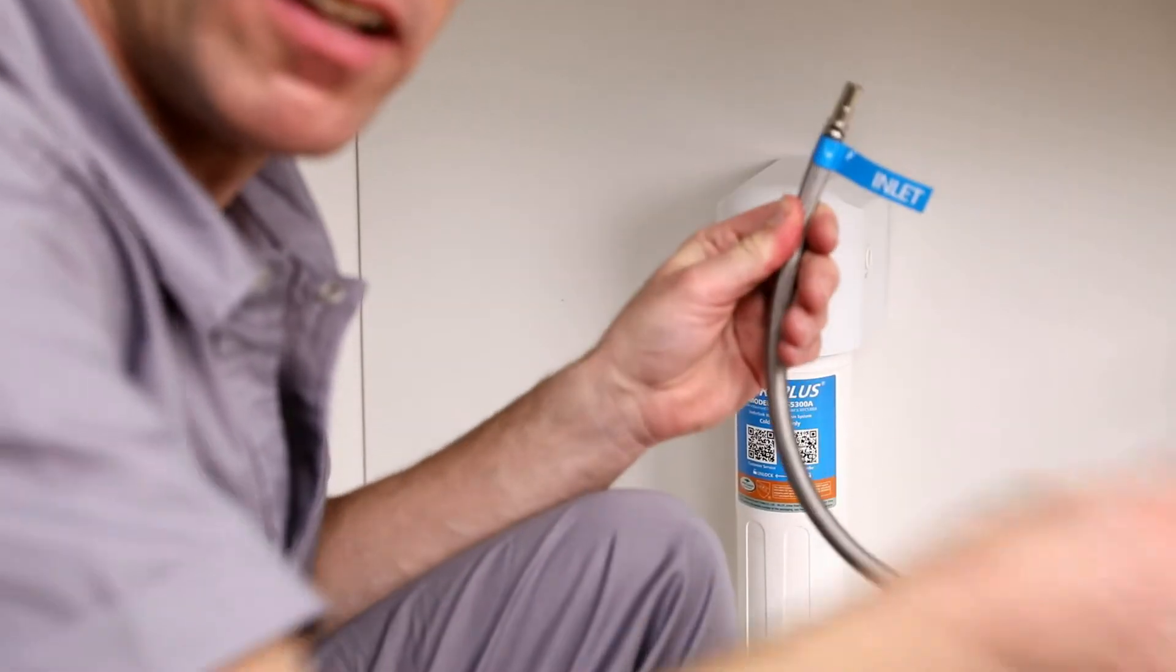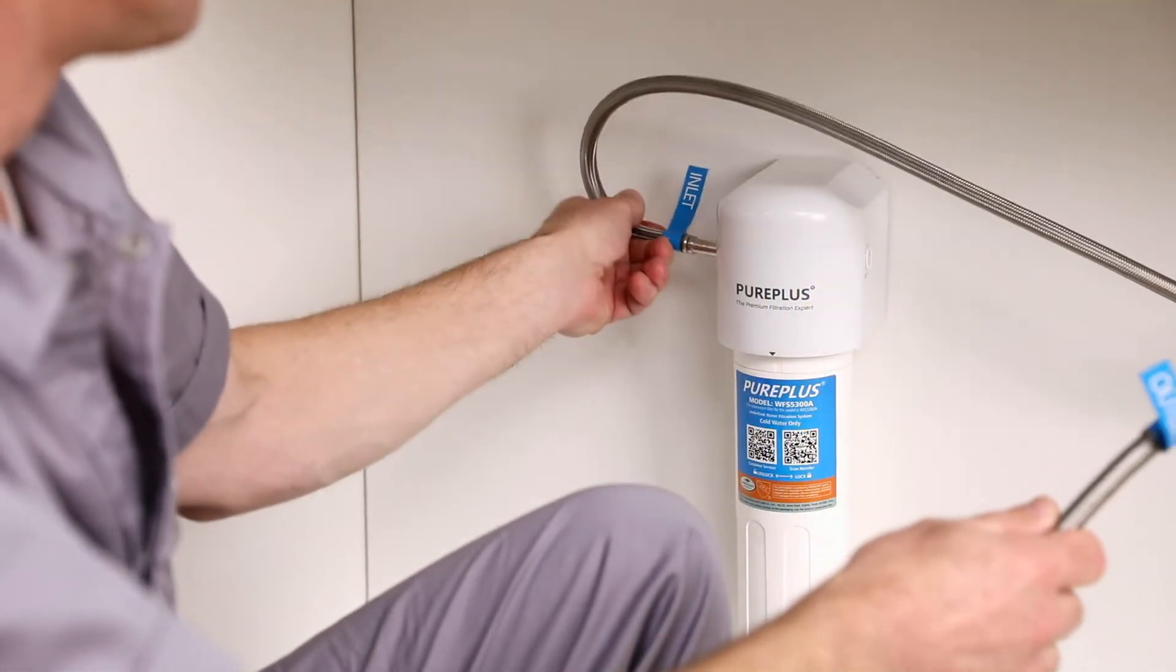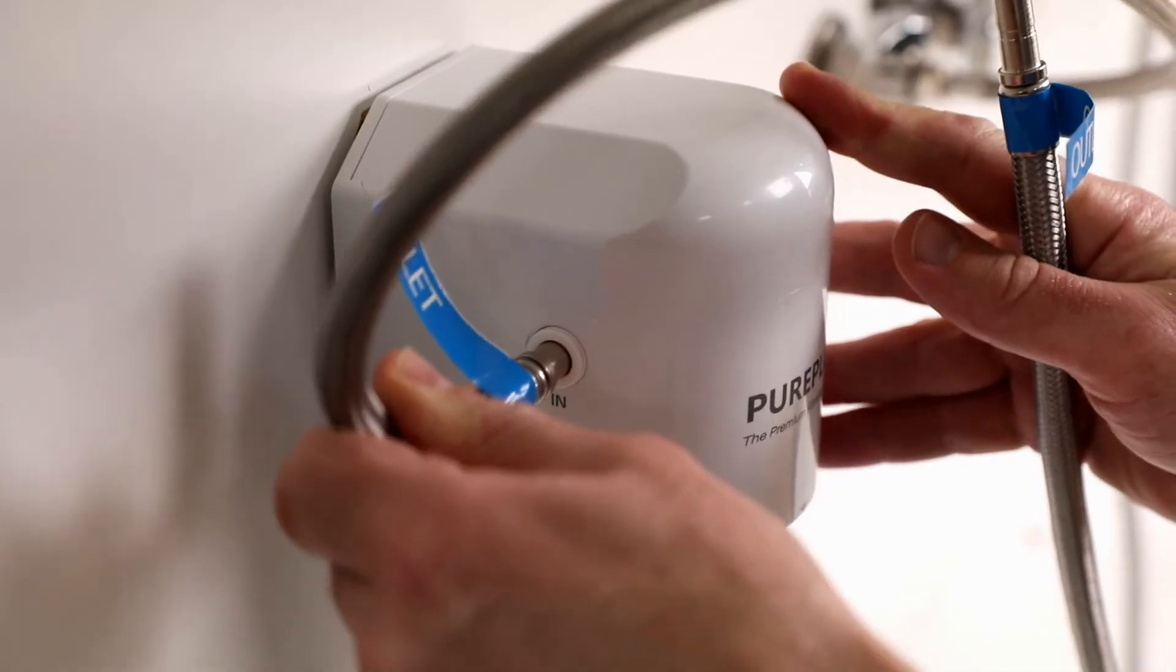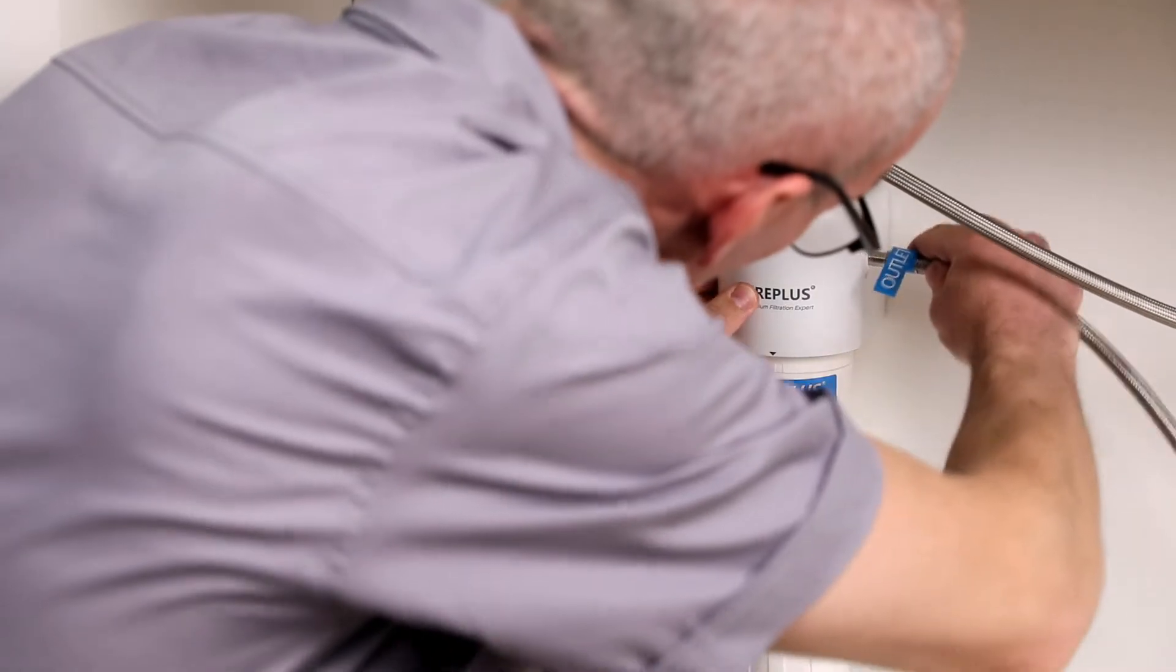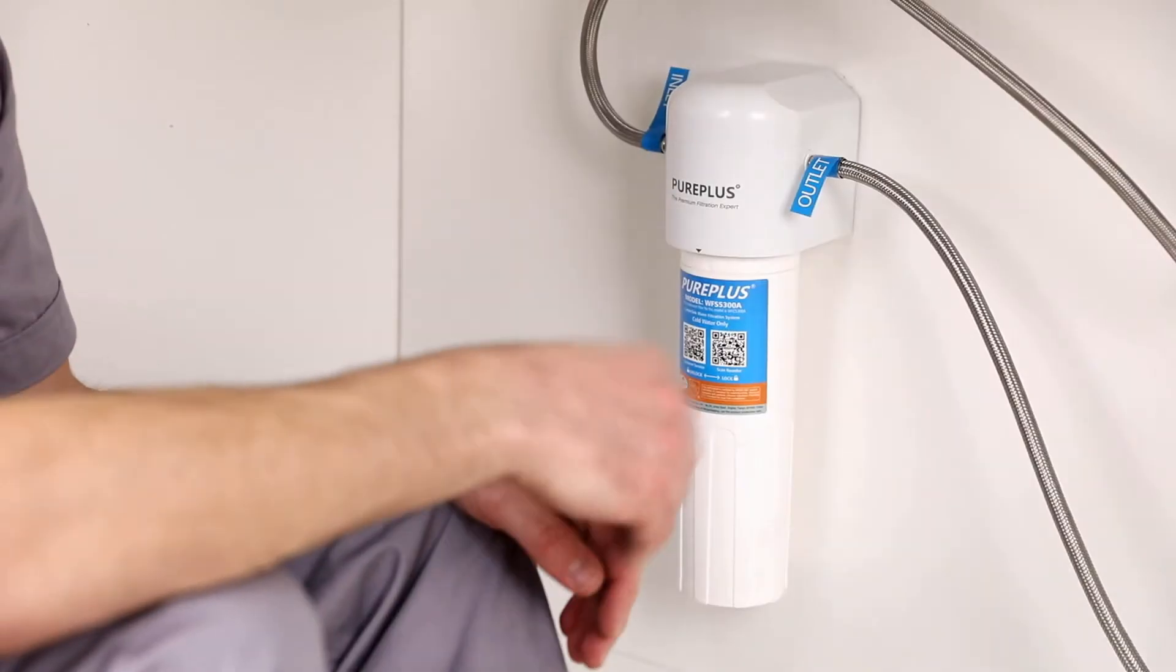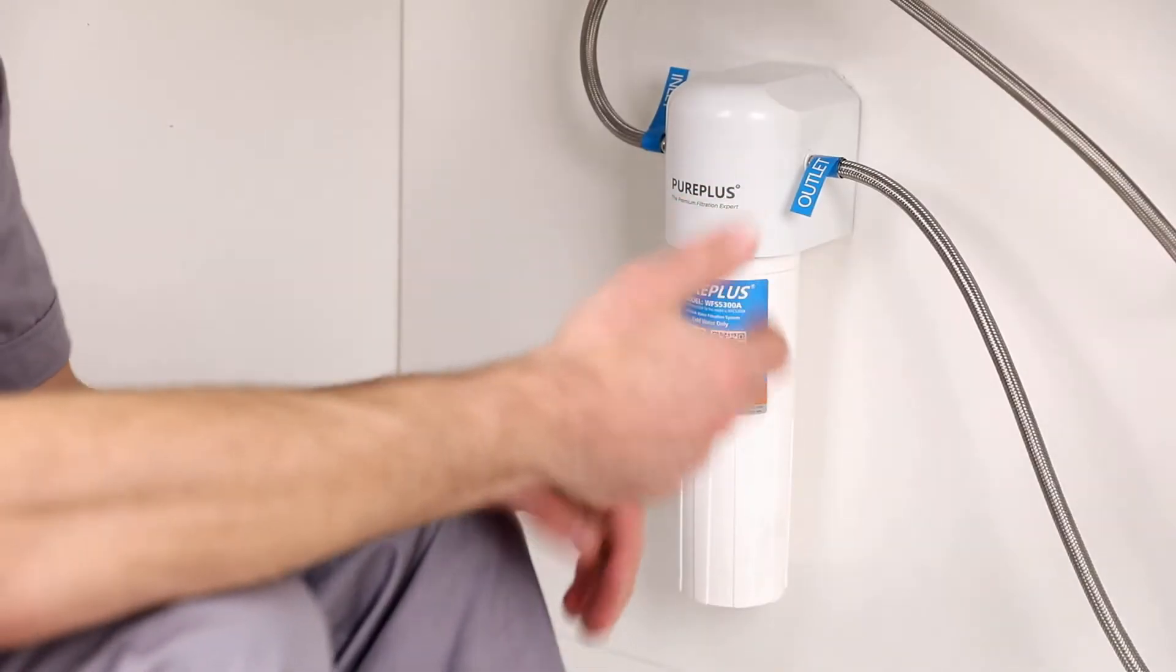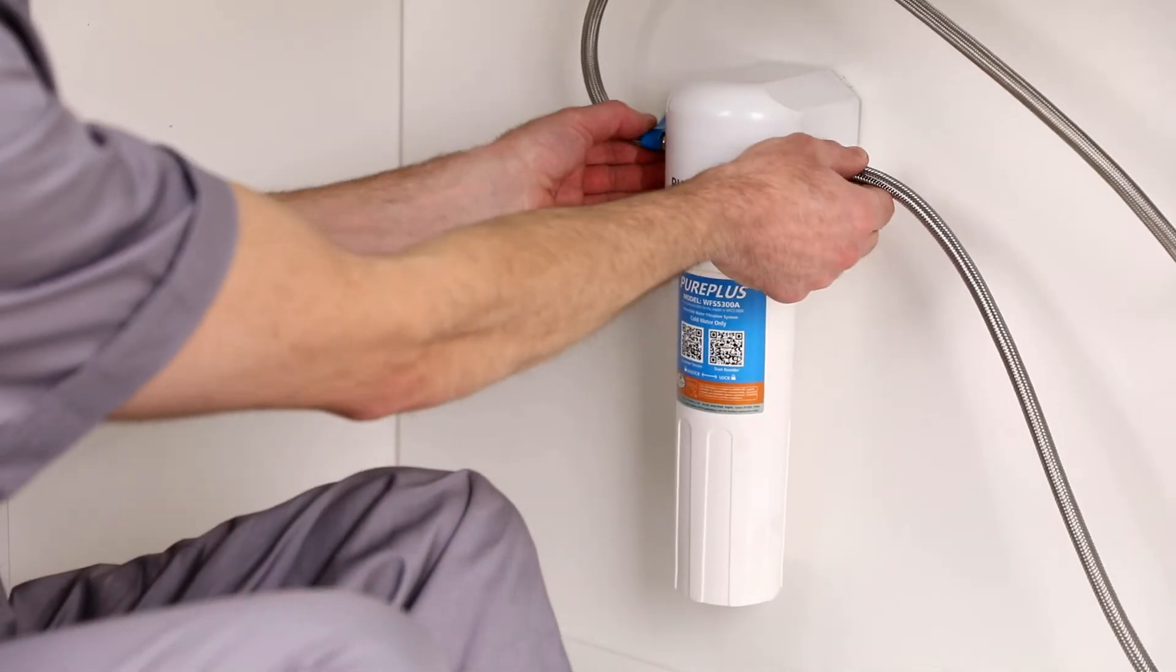Next, insert the inlet and outlet water hoses into the filter head. Push them in until you feel a click. Please note, after completing the insertion, pull the water hoses gently to ensure they are inserted tightly.